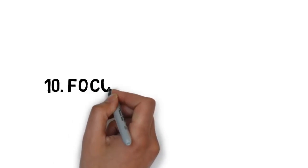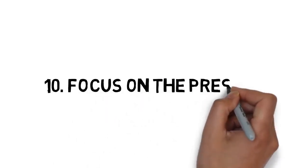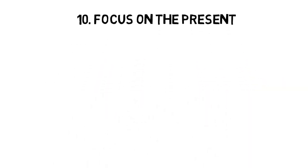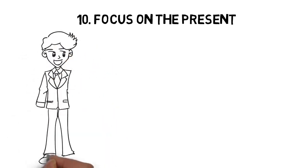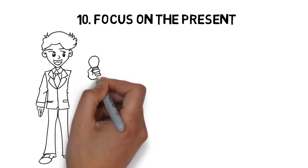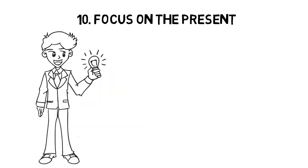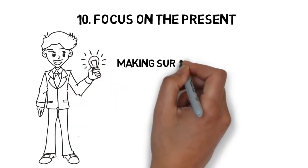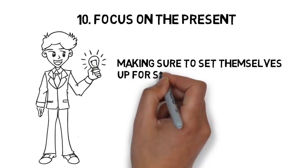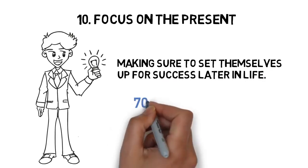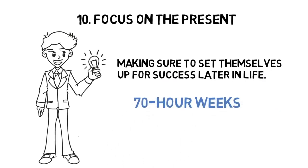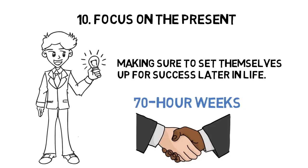10. Focus On The Present. This is another key component to the rich mindset, which many poor people have trouble putting into practice. Instead of focusing on living comfortably today, most wealthy people prioritize their future, making sure to set themselves up for success later in life. This is a big reason why so many wealthy people don't mind working 70-hour weeks because they're treating their present like an investment which will grow more and more profitable over time.